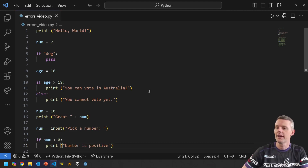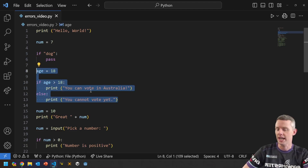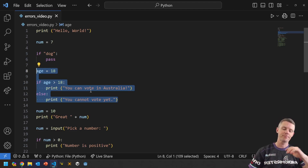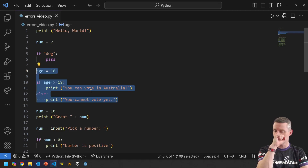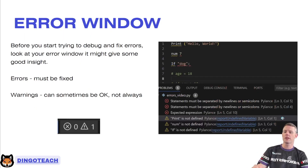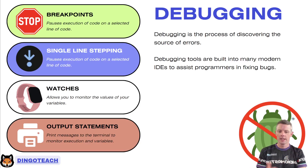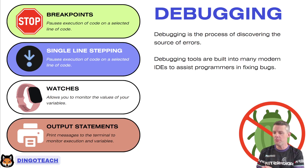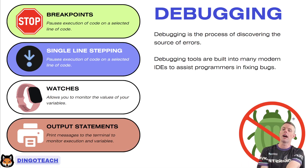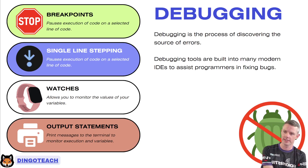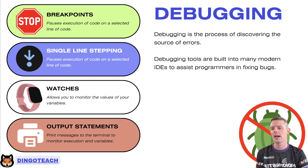However, the error window doesn't fix logic errors. The only way to discover logic errors is to play with your program, put in lots of different data, and go through line by line checking it. Debugging is the process of locating and fixing errors in your code. The four main debugging techniques I like to talk about are breakpoints, single line stepping, watches, and output statements.